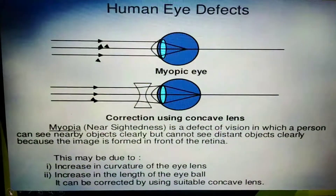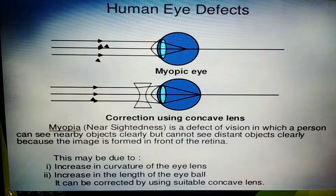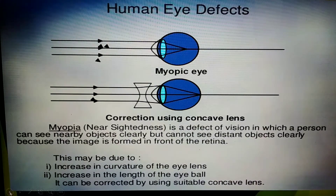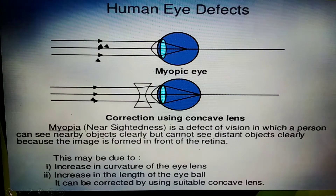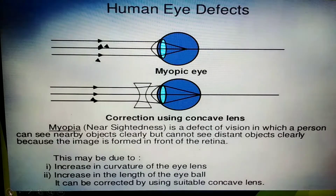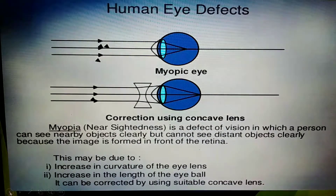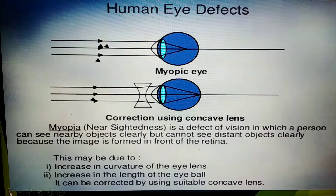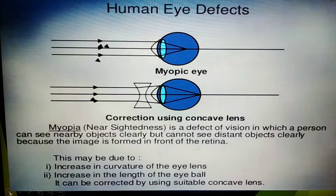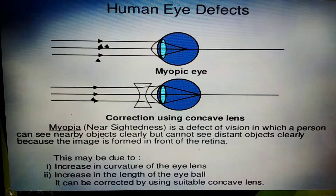Now coming to human eye defects. The major defect is myopia. Not everyone has perfect eyesight. Short-sighted people can see things which are close clearly, but they cannot focus on objects which are far away. For example, they may read the print in a book easily but are unable to read a distant road sign. This condition is known as short sight or myopia.